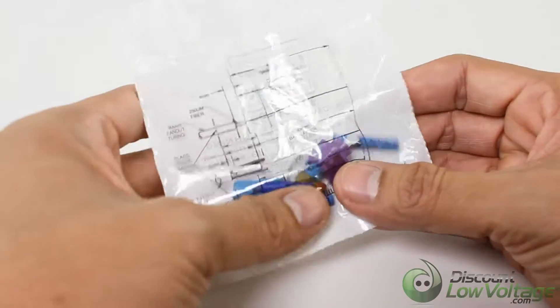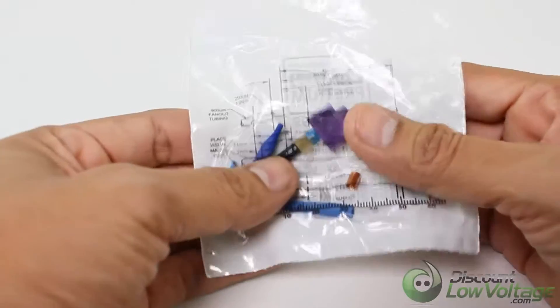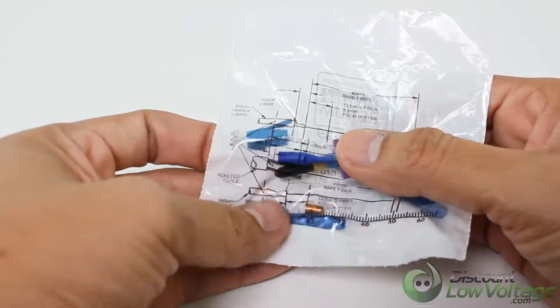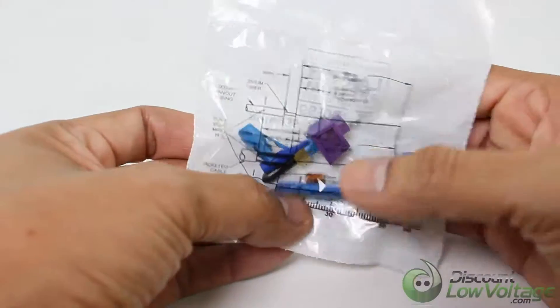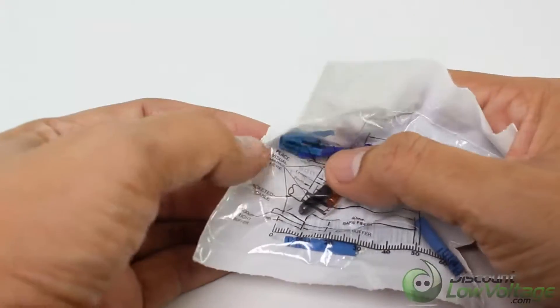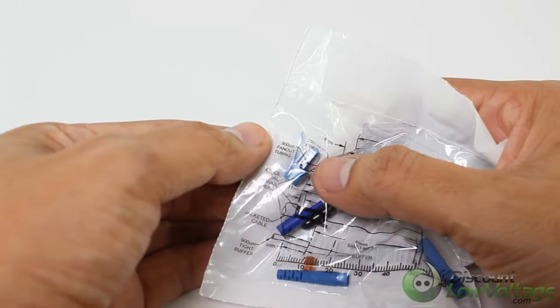Corning Cable Systems Unicam High Performance Connectors offer best-in-class optical performance in a fast, easy field termination solution. Installation of an LC, SC, or ST compatible connectors can be accomplished in about 45 seconds with the Unicam High Performance Toolkit.